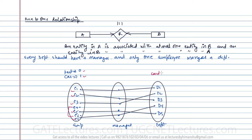The cardinality of department is one, because every department should have an employee and only one employee manages a department — so at maximum, a department participates in one relationship. The participation of department is also one, since every department must have a manager.